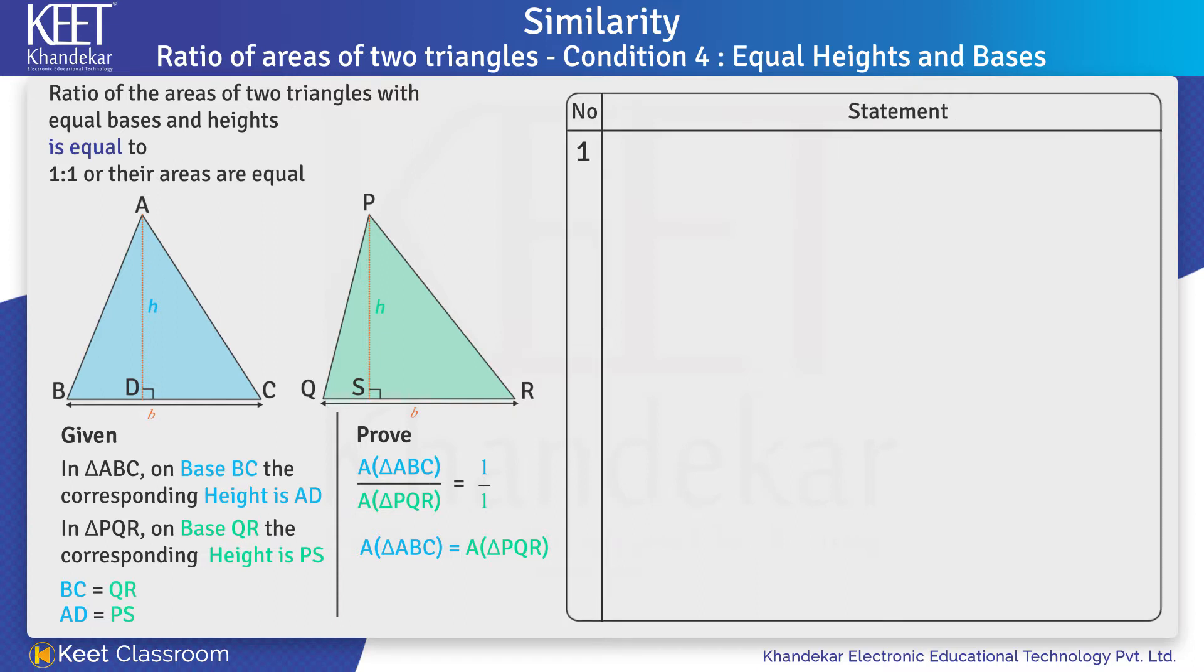In the proof, Step 1: In triangle ABC, on base BC, the corresponding height is AD. In triangle PQR, on base QR, the corresponding height is PS. Since the bases and heights are equal...